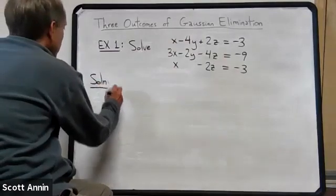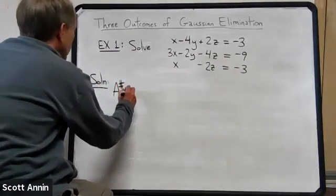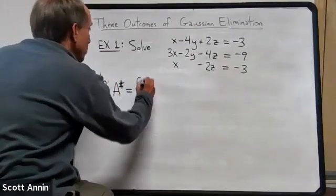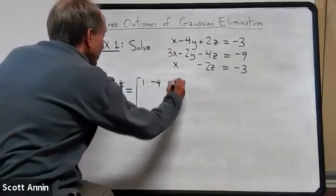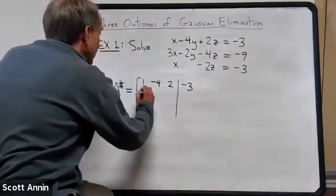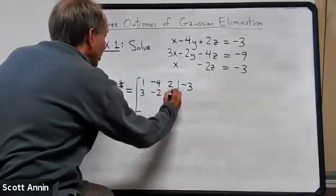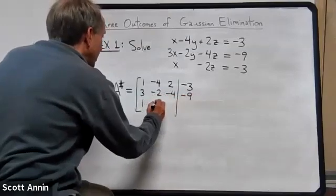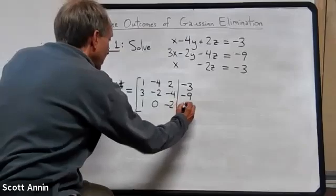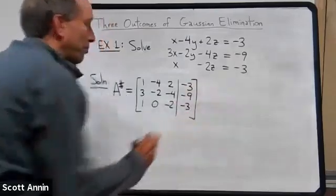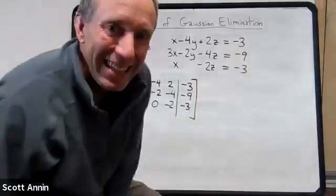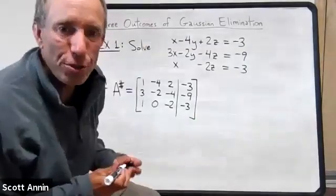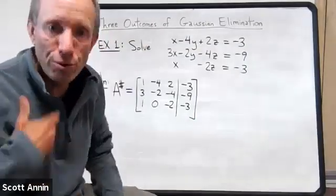So let me just do that here. For the solution, I'm simply going to build this matrix A sharp, which would look like this. We just simply grab the coefficients of the system and place them into this matrix. And so this is what we're going to end up with. Our next job is to reduce this matrix into row echelon form.